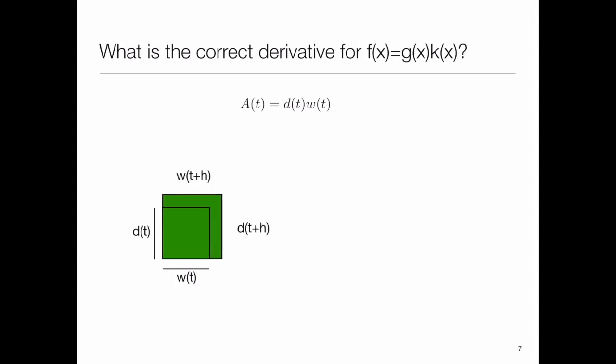So this thing is going to grow, and at a time later, t plus h, w of t will be a little bit longer, and d of t plus h will also be a little bit longer. What I'd like to know is what the derivative is of A of t, written in terms of d and w.